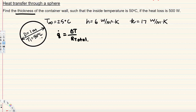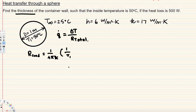Let's begin with conduction. The general equation for R-conduction in a spherical shape is: 1 over (4πk) times (1 over r1 minus 1 over r2), where r1 is the inside radius and r2 is the outside radius.